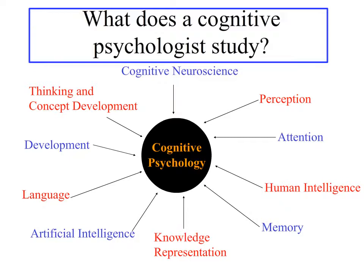What does a cognitive psychologist study? Very generally, a cognitive psychologist will be involved in many different areas of study regarding the human mind. We might take a biological approach from a cognitive neuroscience perspective. We might be focused on perception and attention associated with incoming information — how do we attend to one piece of information while ignoring another? We're also interested in human intelligence, memory, how knowledge is represented, artificial intelligence, language, child and adult development, and thinking and concept development.